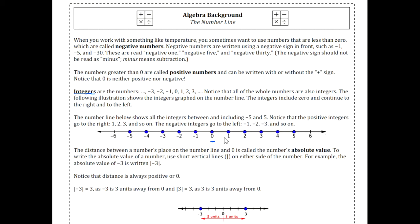To the right of zero the integers are increasing: one, two, three, four, etc. To the left they're decreasing: negative one, negative two, negative three.